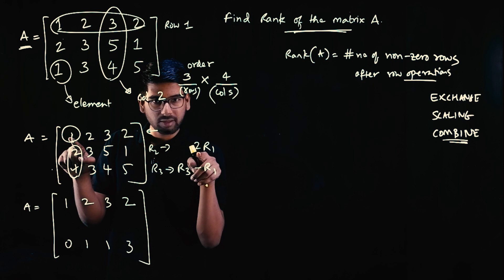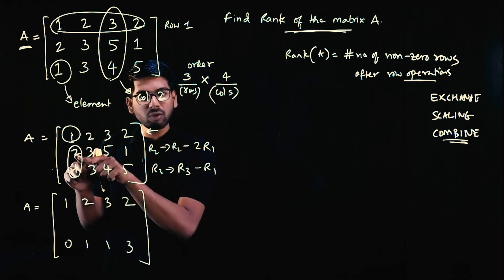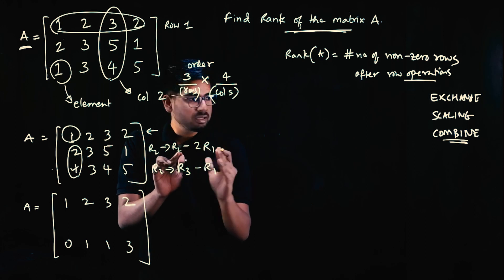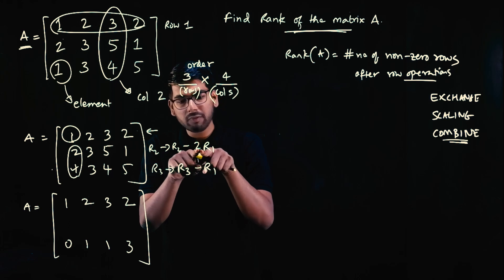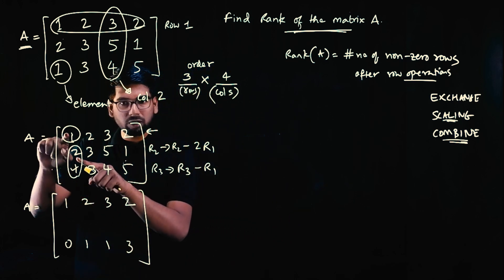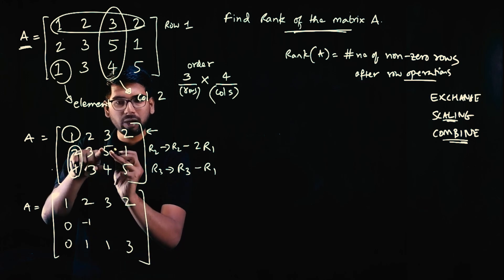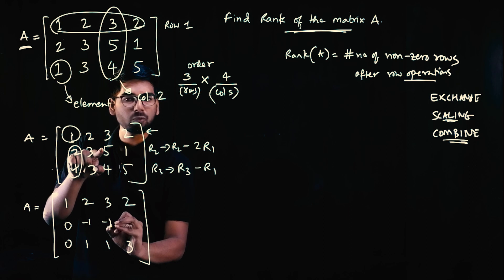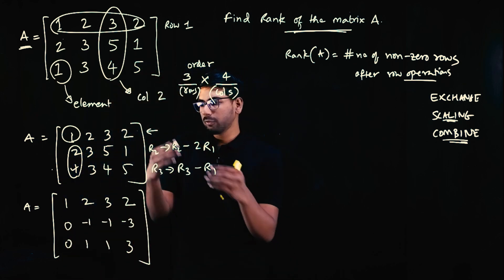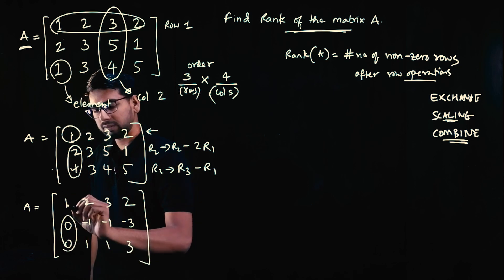Row 2 minus 2 times row 1: 2 minus 2 is 0, 3 minus 4 is -1, 5 minus 6 is -1, 1 minus 4 is -3. After this step, the first element of the first row is marked and the elements below it are zero. Now the second row's second element needs to become 1.